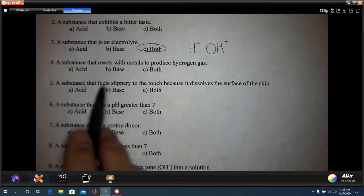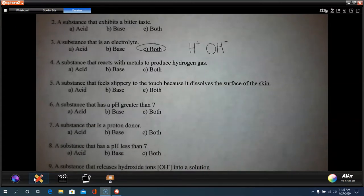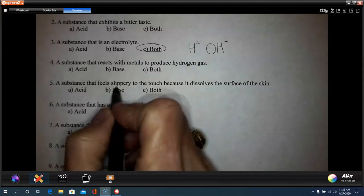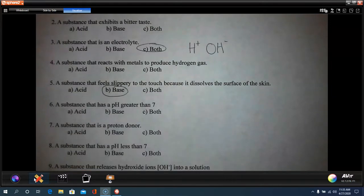Number five, a substance feels slippery to the touch because it dissolves on the surface of the skin. This one's kind of cool. I don't recommend that you go play in your mom's bleach, but bleach is a really good example. If you've ever had to do laundry and you've used bleach, if you get it on your skin, it doesn't burn, but it feels really slippery. Bleach is a base. Soap, soap that you shower with, that's a base. Dish soap, all those things are bases. Bases have that slippery feel to them.